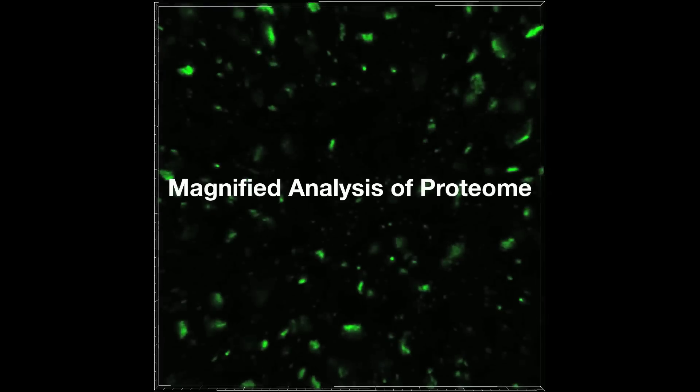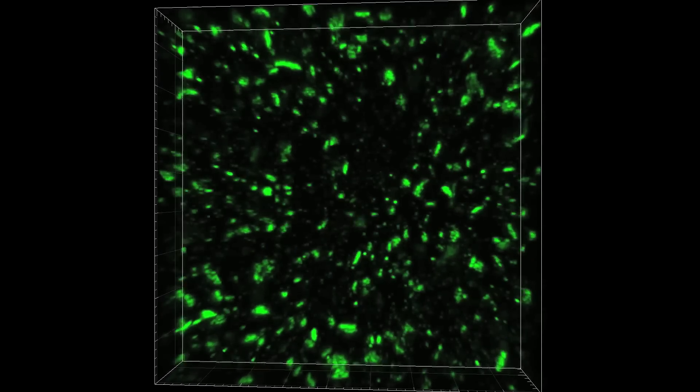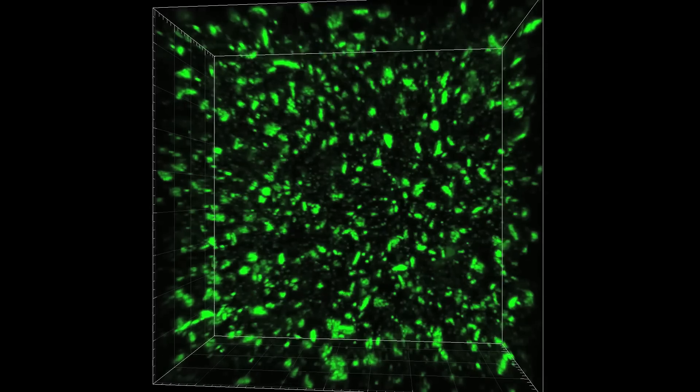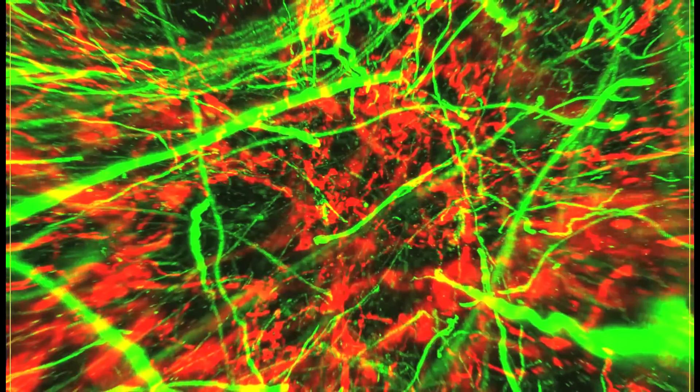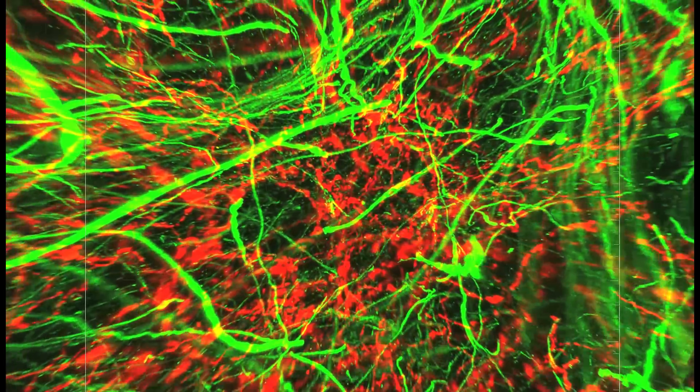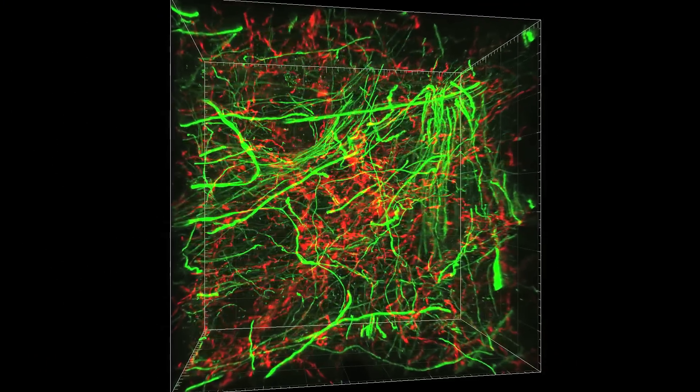Their new technique, known as magnified analysis of proteome, or MAP, uses a chemical process to expand tissue samples while preserving all of the proteins within the cells down to the nanoscopic details. Their technique relies on flooding the brain tissues with acrylamide monomers, which are attached to the proteins using formaldehyde.